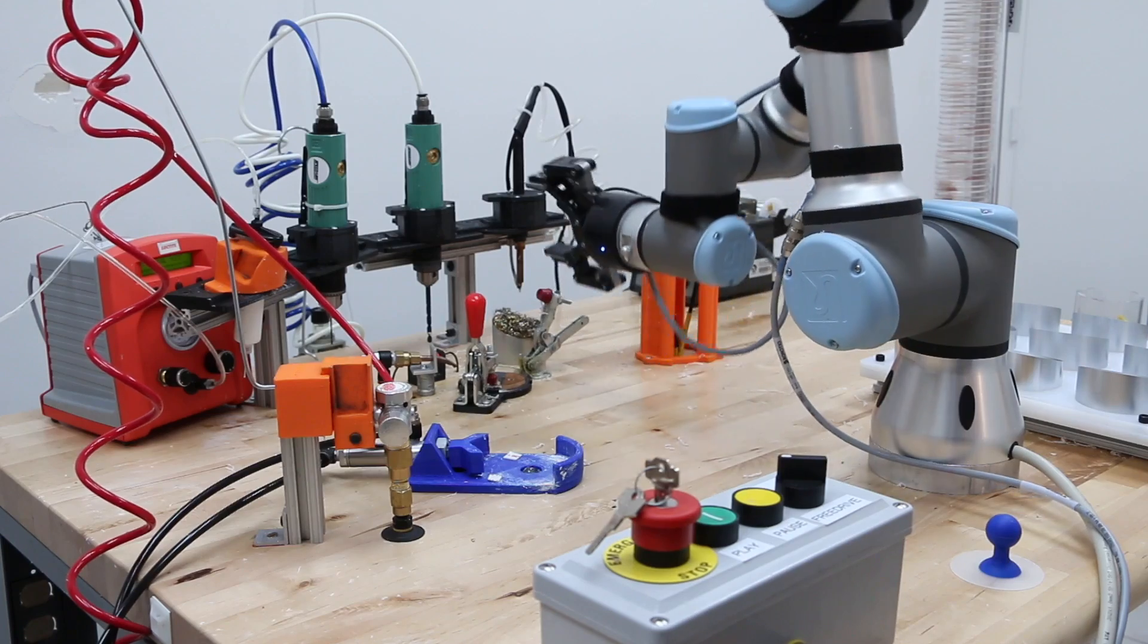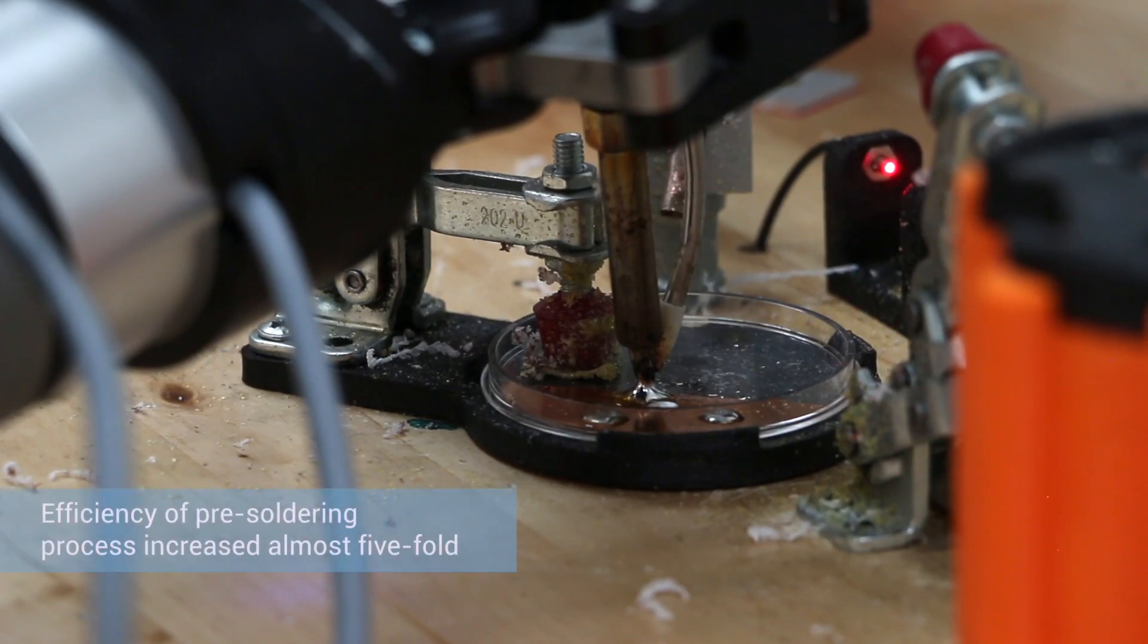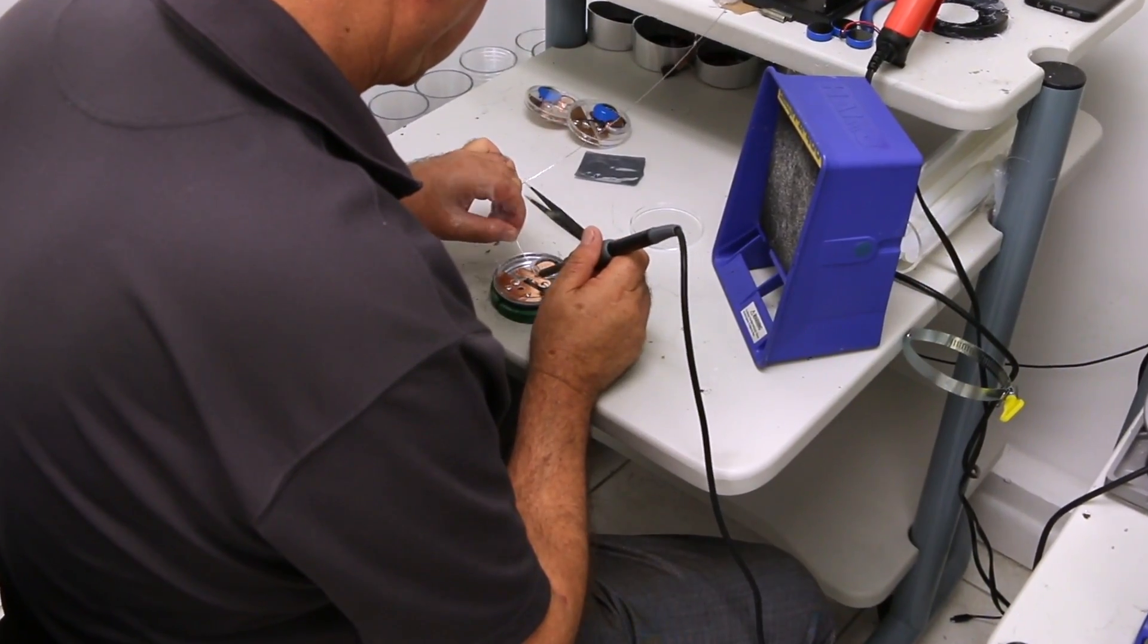With drilling complete, the UR3 starts the soldering process. The pre-soldering actually increased almost five-fold the efficiency of the process. Before the robot was here, you really had to have three hands.